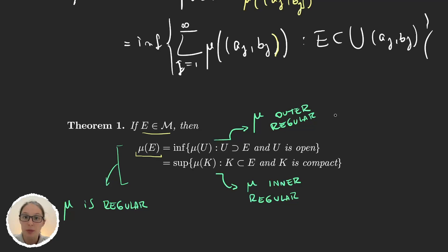Well, it turns out that Borel measures are regular. So they are both outer regular and inner regular. And this is something that doesn't happen for every measure.